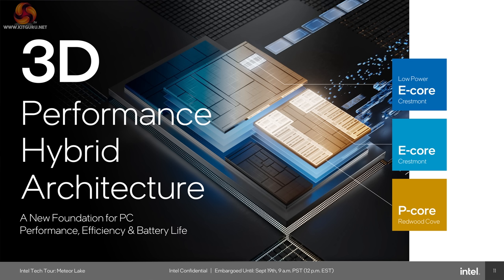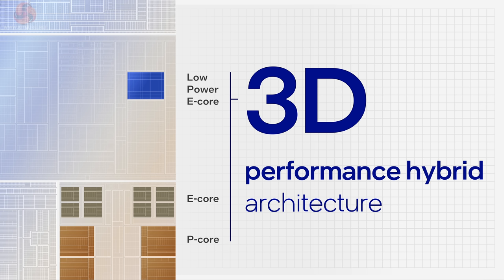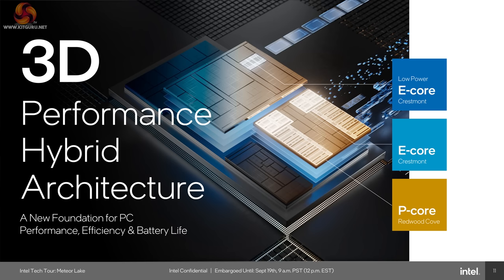3D performance hybrid architecture was my main note. The reason why we call it 3D hybrid architecture with Meteor Lake is because we have three hierarchies of cores. The compute tile has P and E cores, and there are low power E cores on the SOC tile. Where Alder Lake and Raptor Lake introduced hybrid architecture with E cores and P cores, we now have another tier of ultra low power E cores — so three hierarchies of cores, though the two low-power types share the same architecture.